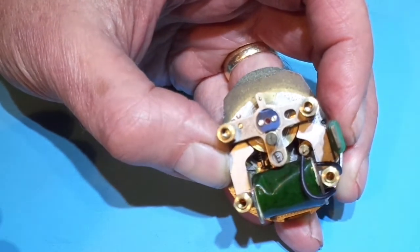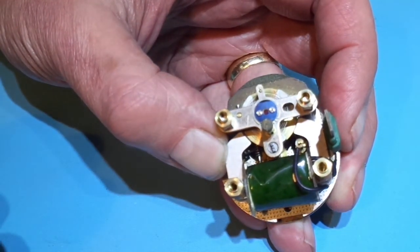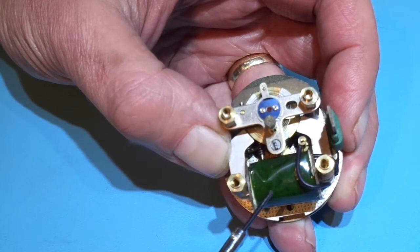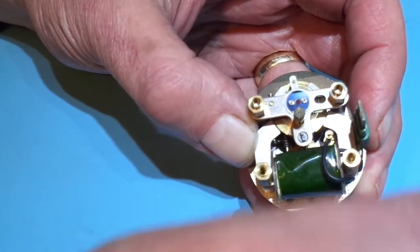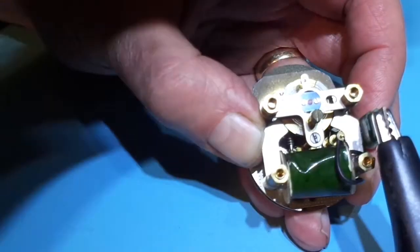Then the final item that we're going to check is the solenoid. It is possible to get an internal break in the connections of the solenoid, and one way to check for this is to power up the clock. So I'm going to do that now by connecting a 12 volt supply.